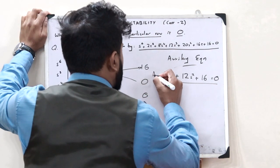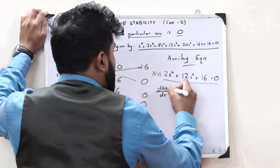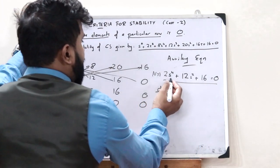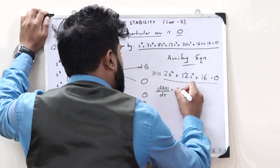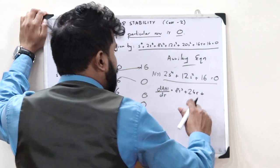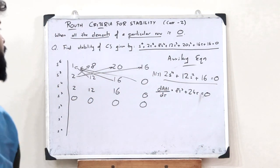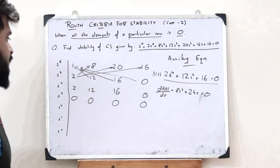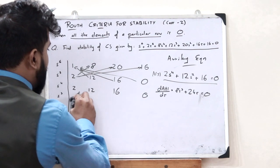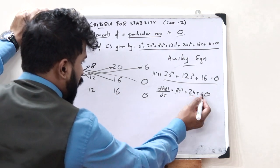Now we find dA(s)/ds by differentiating the auxiliary equation. Taking the derivative gives: dA(s)/ds = 8s³ + 24s. The derivative of the constant term 16 is 0, so this is the derivative of the auxiliary equation.